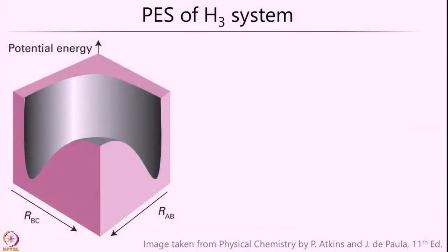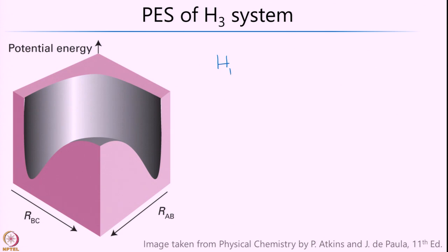Having refreshed our memories on reaction coordinate diagrams and potential energy surfaces, let us now start looking at a very simple case of an H3 system. Let us write down the reaction we are interested in: we have a hydrogen atom H_A interacting with a hydrogen molecule. To distinguish the hydrogens, I am writing them as H_A, H_B, and H_C, and this gives us H_A–H_B plus H_C.